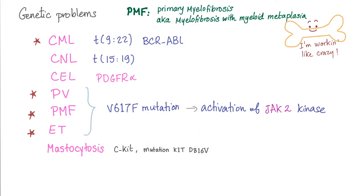Usually they have genetic problems. In CML, it's the 9;22 translocation. In CNL, it's the 15;19 translocation. In PV, PMF, and ET, there is the V617F mutation — activation of the JAK2 kinase. In mastocytosis, it's the C-kit mutation. What other disease involves a C-kit mutation? Let me know in the comments below.